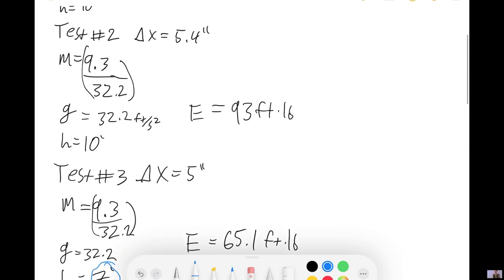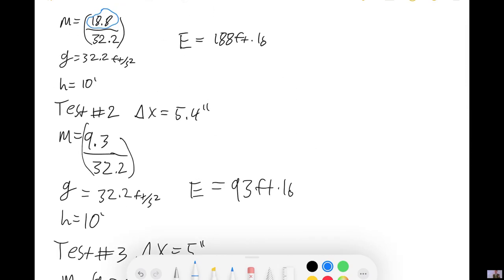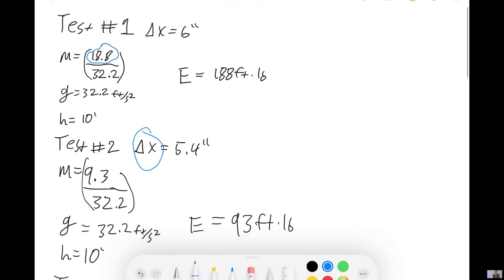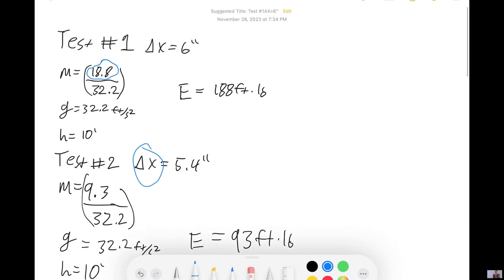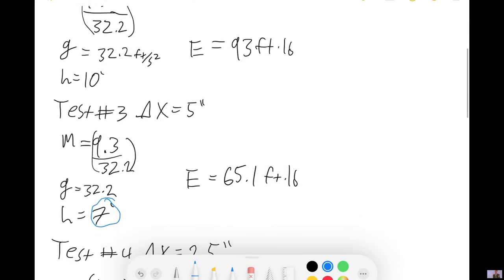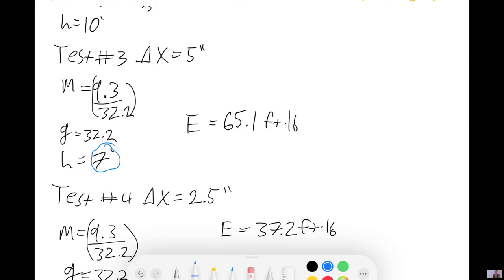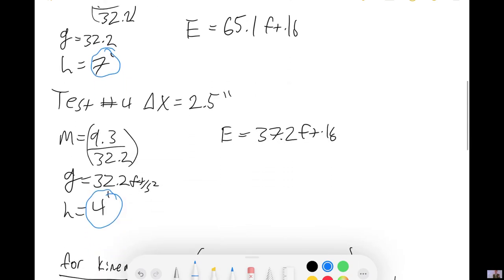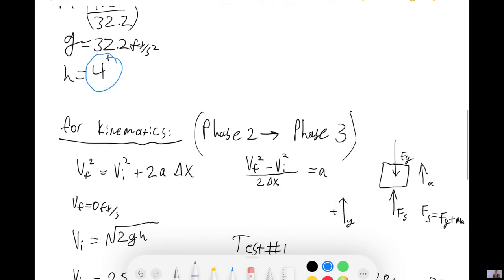If you'll notice, I also notated the delta X. This delta X is how much the strut compressed. This would be 5.4 inches in this test. In test number one, it was 6 inches, so on and so forth. Obviously, we're going to have less strut compression with less energy involved. However, something interesting from that comes, and you will see that in the kinematics part of this.